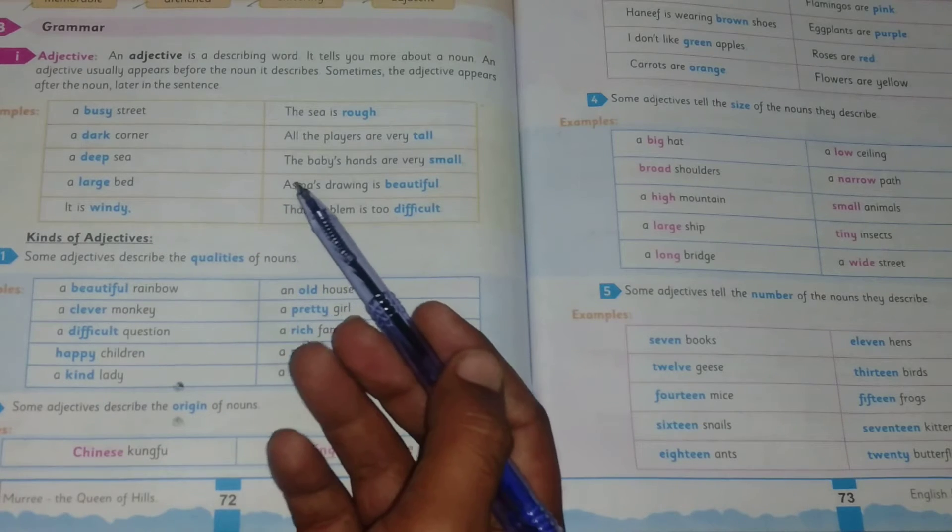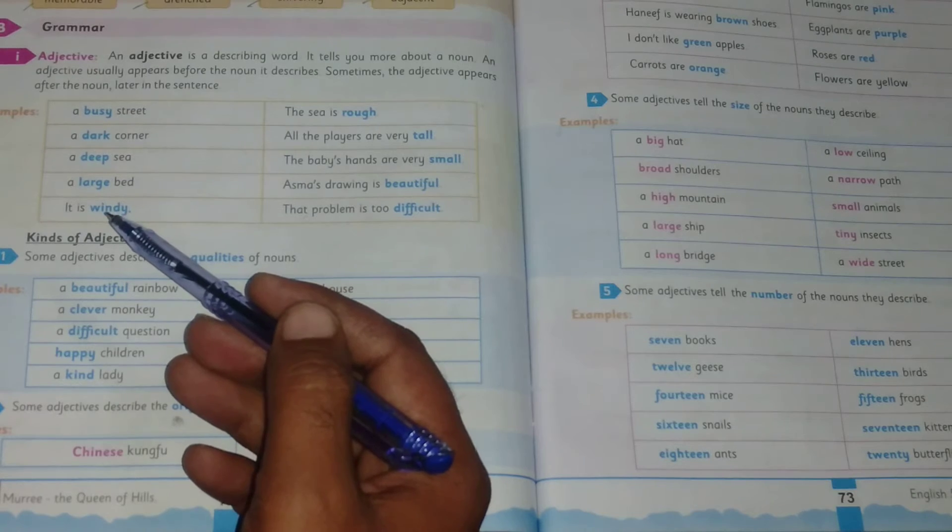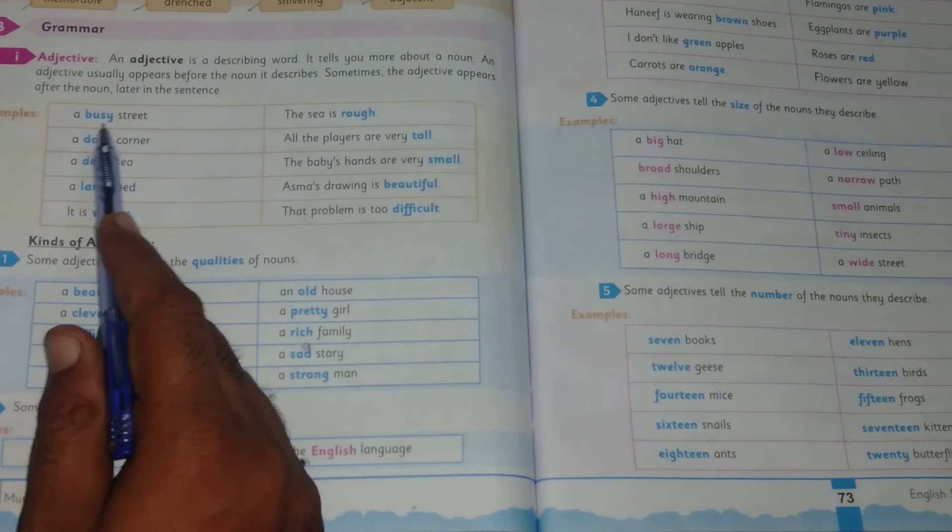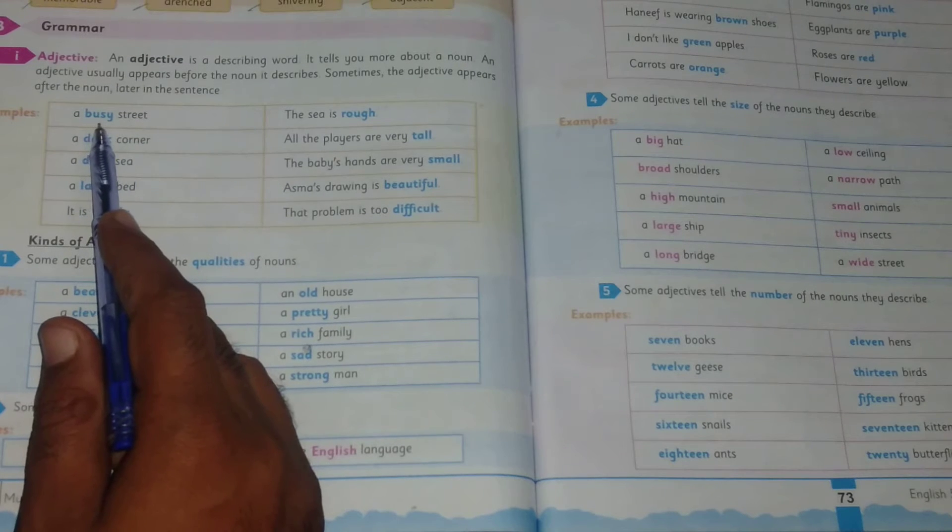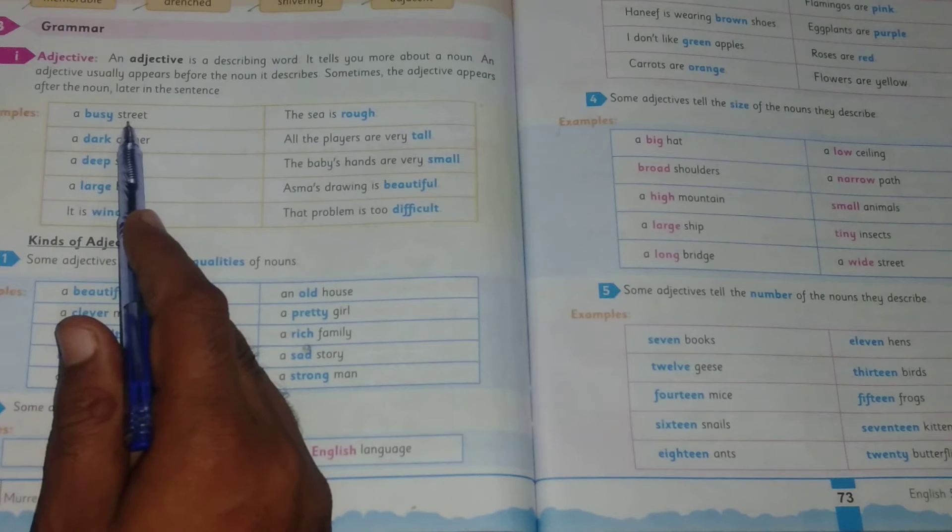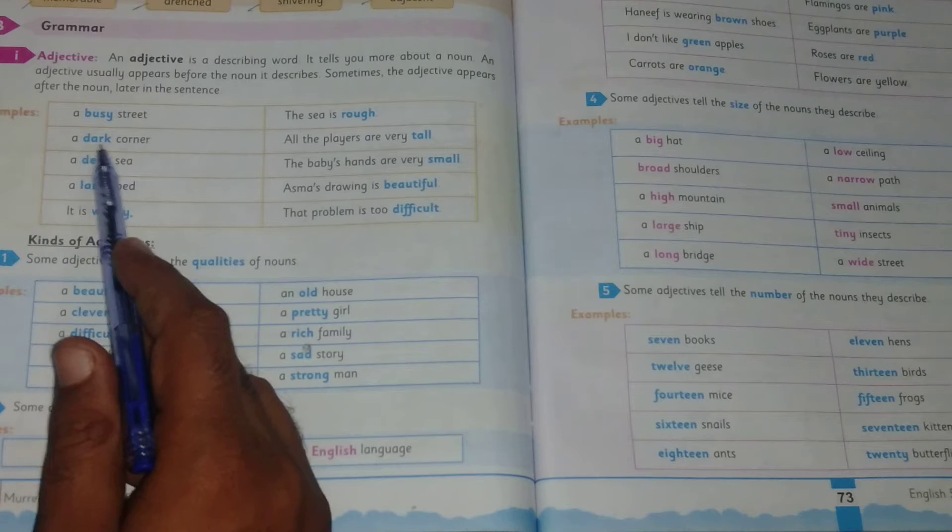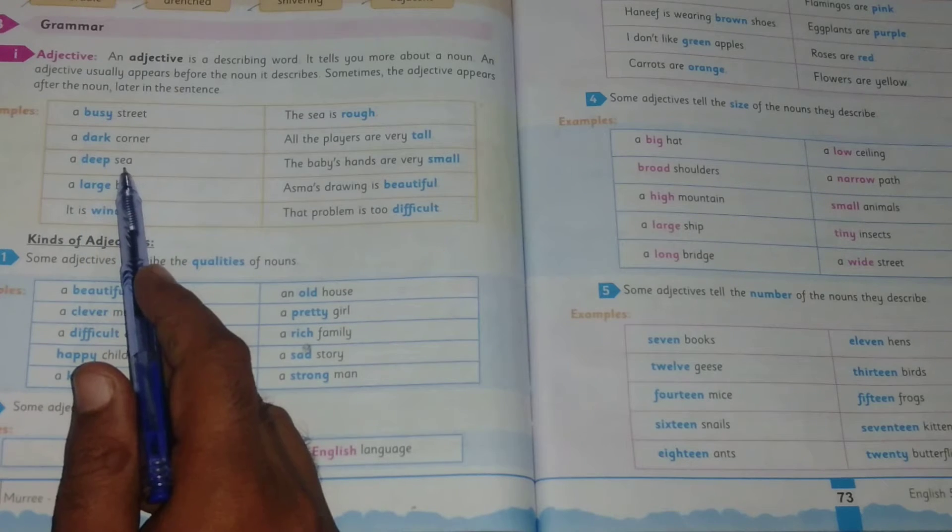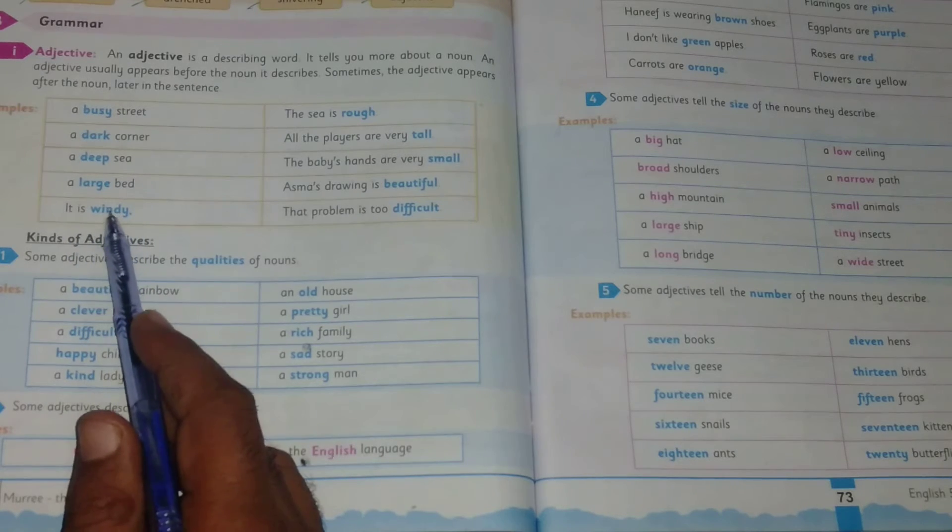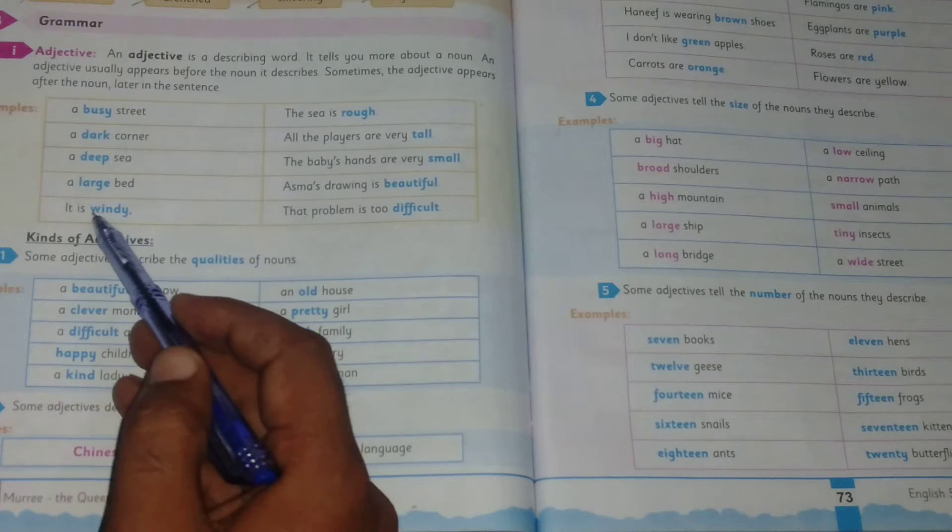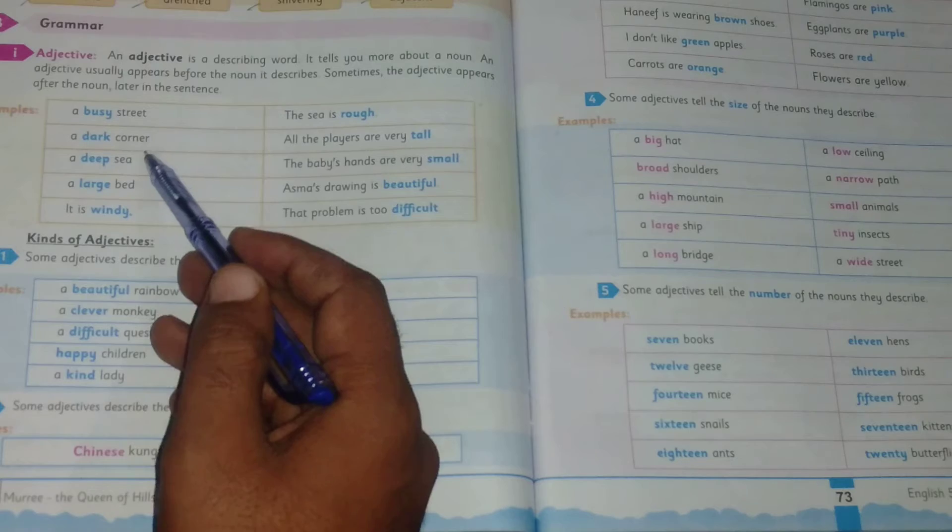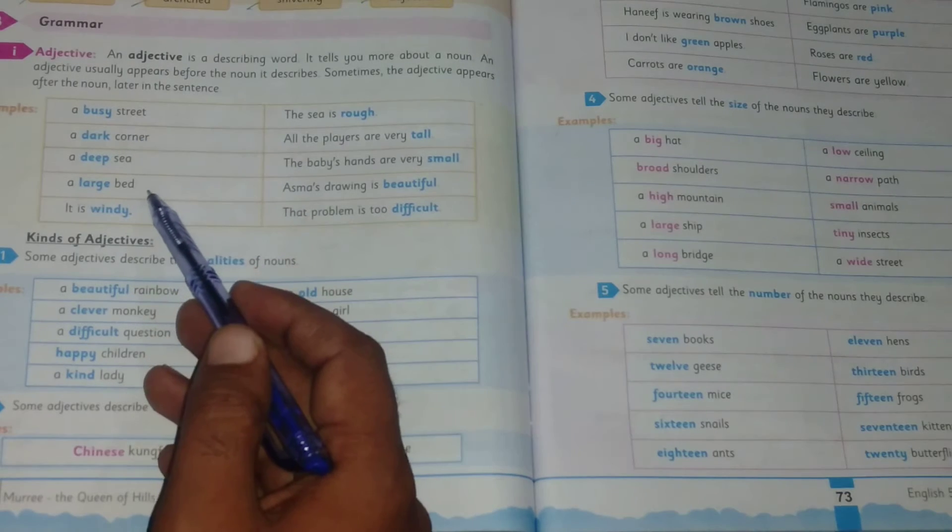An adjective is a word that describes a noun. It tells more about a noun. Adjectives appear after the noun or before a noun. Examples: a busy street. Here busy is the adjective and it describes the noun street. A dark corner, a deep sea, a large bed. It is windy. All these are adjectives describing the nouns street, corner, sea, and bed.